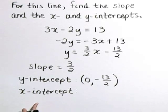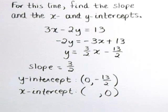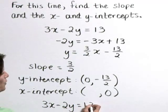To determine the x-intercept in our equation, we need to let y equal 0. I'm going to do that in our initial equation, 3x minus 2y is equal to 13.